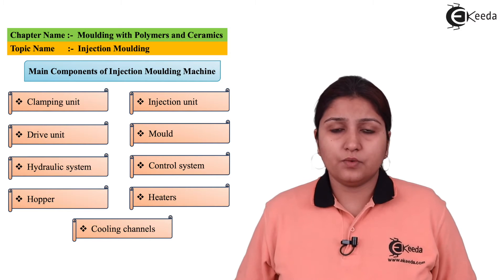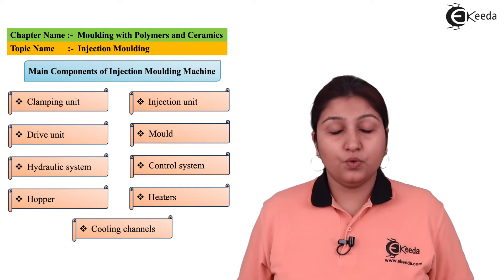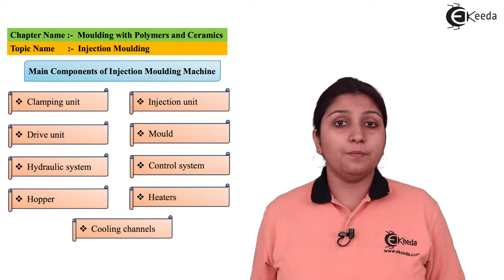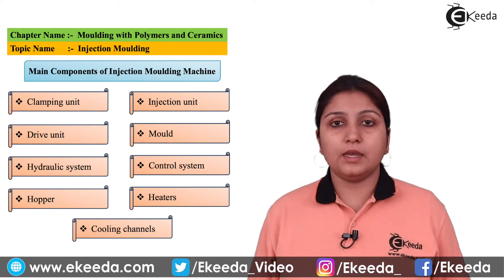These are some components listed which are used in injection molding process. You need a clamping unit, an injection unit, because all these units play a very important role unlike in compression molding or any other kind of molding process.